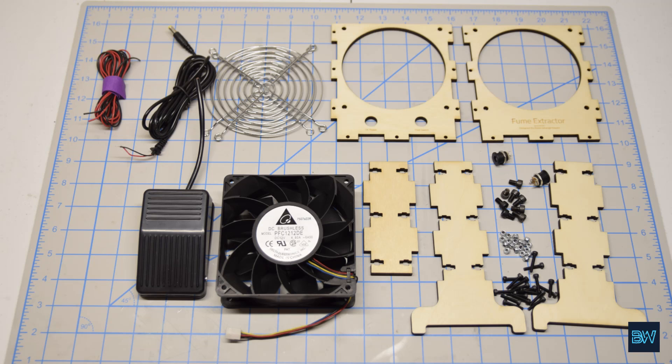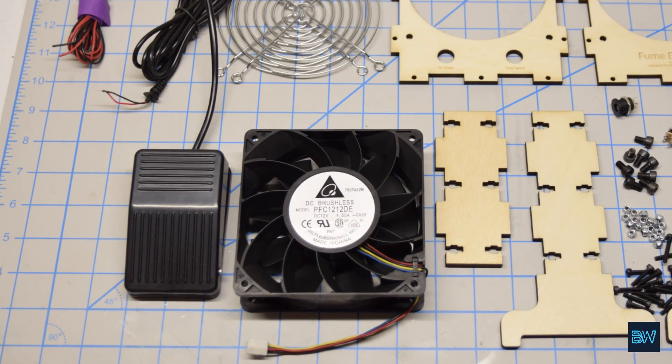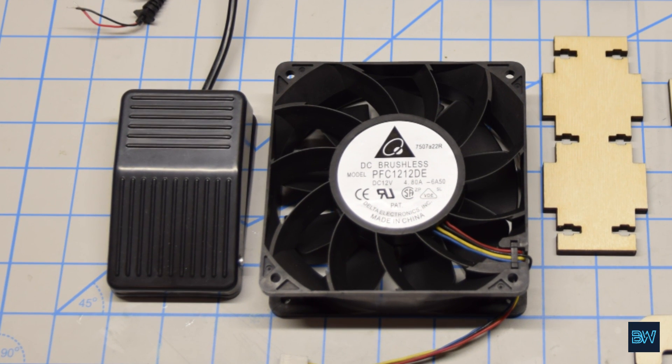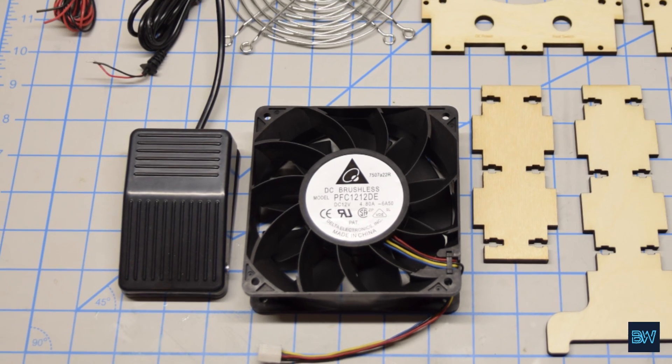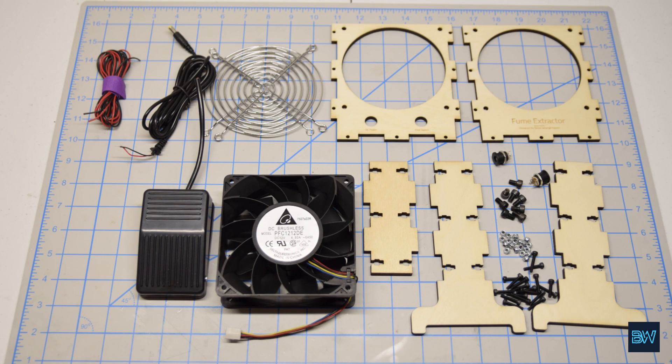The fume extractor is built around a powerful 120 millimeter fan from Delta. It's controlled using a foot switch and housed in a custom laser-cut plywood case.